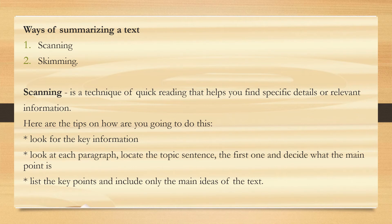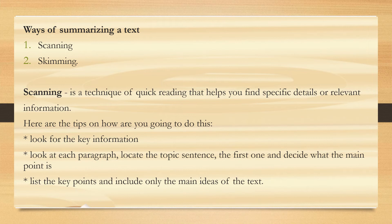Another way to summarize a text is through scanning and skimming. Scanning is a technique of quick reading that helps you find specific details or relevant information. When you scan, you only find the keywords needed to answer the question. Here are the tips: First, look for the key information. Second, look at each paragraph, locate the topic sentence — the first one — and decide what the main point is. And third, list the key points and include only the main ideas of the text.